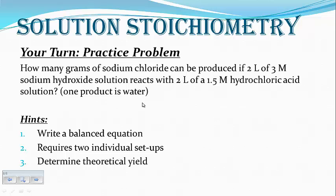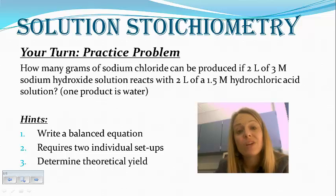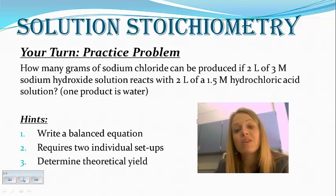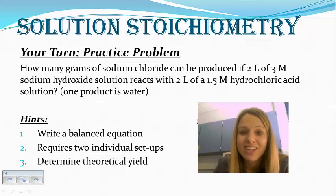I gave you one product to help you with writing out your equation — one product is water. It's going to require two individual steps, just like the previous slide, and then you need to determine the theoretical yield, meaning how much product could be produced. If you have any questions or concerns that you need help with, you can come see me before class. This ends the screencast — have a good night.